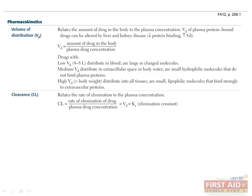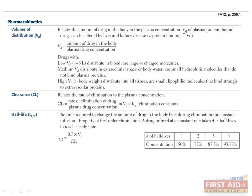Half-life is the time required to change the amount of drug in the body by one-half during elimination or constant infusion. The half-life equals 0.7 times the volume of distribution divided by the clearance and is a property of first-order elimination. A drug infused at a constant rate takes four to five half-lives to reach steady state.